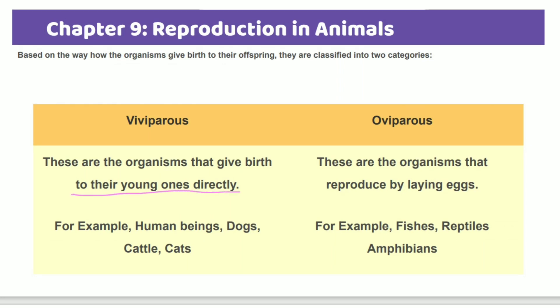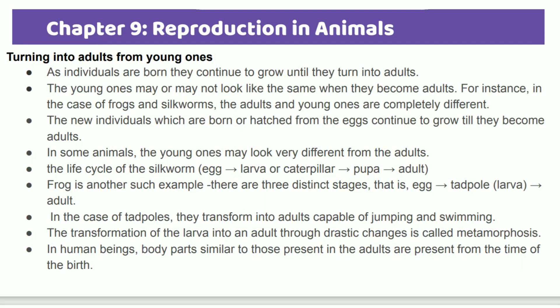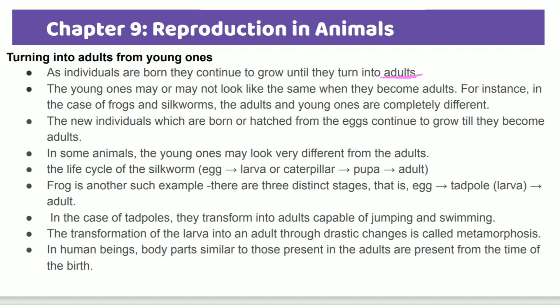Animals that give birth directly are called viviparous — examples are humans, dogs, and cats. Animals that reproduce by laying eggs are called oviparous. As individuals are born or hatched, they continue to grow until they turn into adults. Young ones may look similar to adults or different.